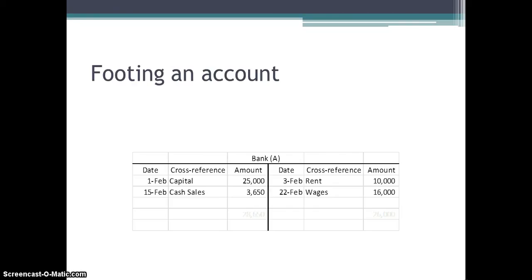Step 1 requires us, when footing the ledger, to add up all the amounts on the debit side. Our total debits for the month in the bank ledger were $28,650. Step 2 requires us to add up the amounts on the credit side, which gave us total credit entries of $26,000.